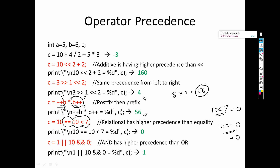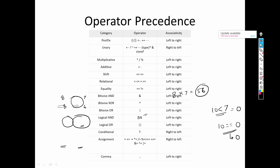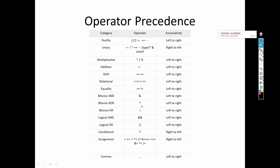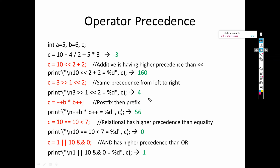In an expression with logical OR and logical AND, looking at the precedence table, logical AND has higher precedence than logical OR. So logical AND is performed first. For 1 || 10 && 0: first 10 && 0 — 10 is non-zero and 0 is zero, so logical AND gives 0. Then 1 || 0 gives 1. The answer is 1.